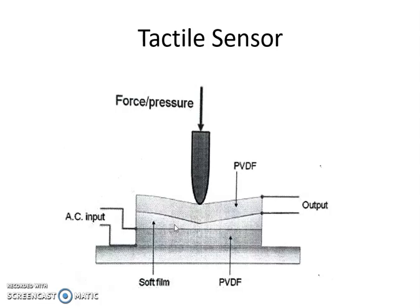When AC supply is applied across the lower PVDF layer, the soft film made up of piezoelectric material deforms — that is, its dimensions change. When its dimensions change, it develops voltage across its upper surfaces, which is why the upper PVDF layer is connected across the output.